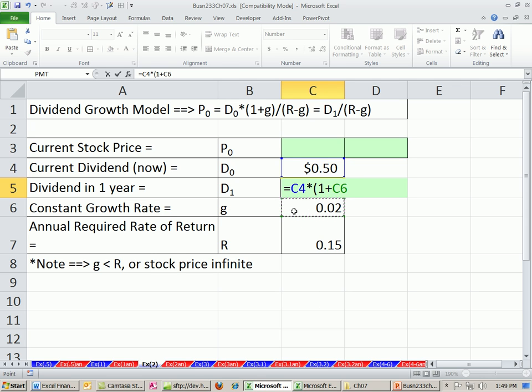Remember, we've seen this so many times in this class. When you see this 1 plus, or even like in our last chapter we saw 1 minus, the 1 always represents the full amount. That's the $0.50. And the plus or minus represents the proportional change. There's our dividend 1 period out from now.